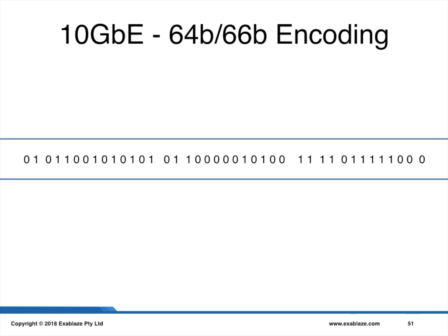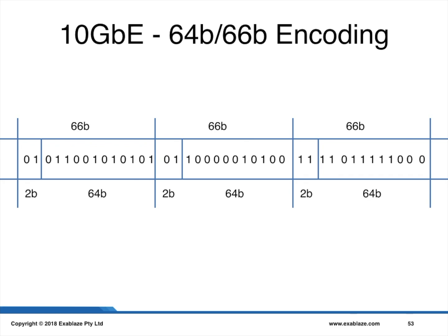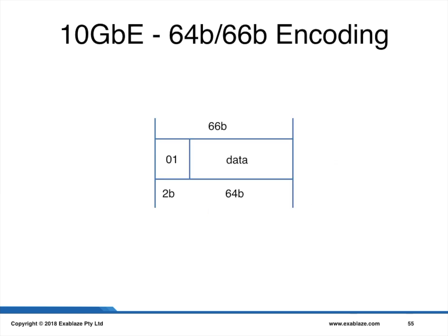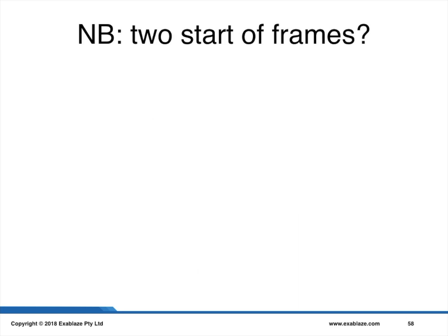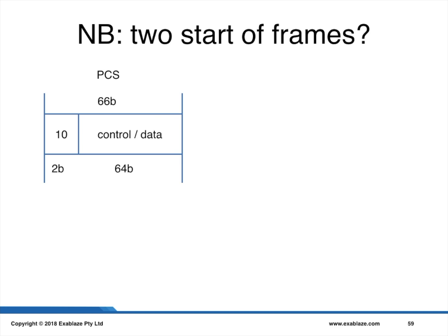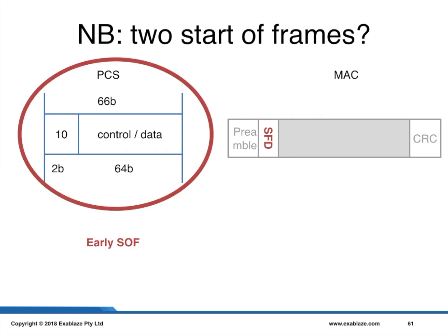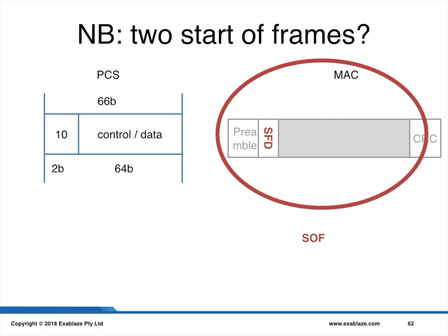In 64/66 encoding, we take our stream of 1s and 0s on the wire and break them into blocks of 66 bits. We further break these blocks into 64 data bits and 2 header bits. The header bits describe the state of the 64/66 block: when the header bits are 0-0 or 1-1, the block is assumed to be in error; when the header bit is 0-1, there is data inside the block; and when the header bit is 1-0, there is some sort of control in the block — typically marking the start-of-frame, end-of-frame, or an idle symbol. You may have noticed we now have two different types of start-of-frames: the PCS layer start-of-frame, which I'll call the early start-of-frame, and the MAC layer start-of-frame, simply called the start-of-frame.